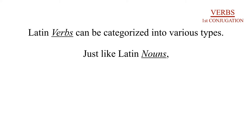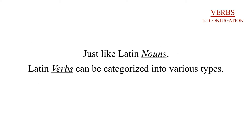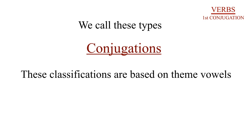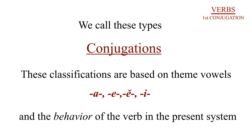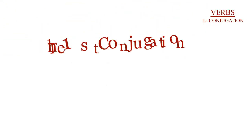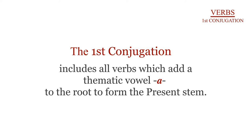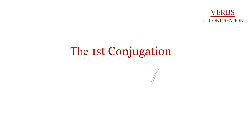Just like nouns, Latin verbs can be categorized into various types. We call these types conjugations. These classifications are based on theme vowels — a, e, short e, and i — and the behavior of the verbs in the present system. The first conjugation includes all verbs which add a thematic vowel, a, to the root to form the present stem.